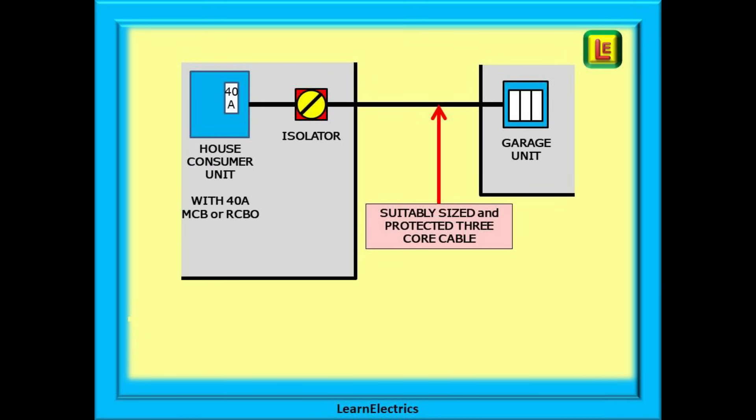I also always installed a separate rotary isolator switch inside the house and this served several purposes. If underground SWA was to be used, 6 or 10 millimeter twin and earth could make the short connection from the house consumer unit to the isolator switch and the SWA could be terminated in the rotary isolator. It's sometimes not that easy to get SWA into a consumer unit.